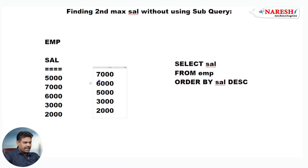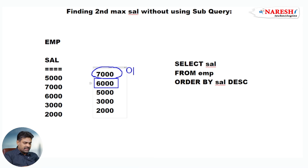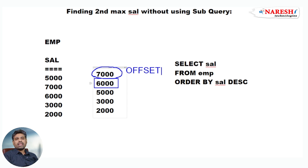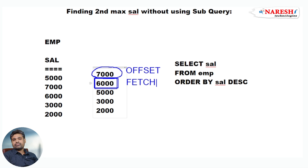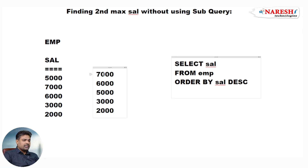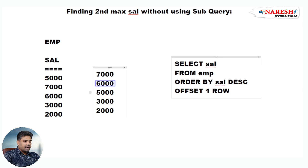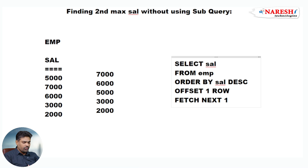Our requirement is getting this second maximum salary, so we want to skip the first row display. To skip rows, we use the OFFSET clause. Using the OFFSET clause we can skip rows. Then we want to fetch the next row, so we use the FETCH clause. We do not want to get the first row, so write OFFSET 1 ROW. Next, we want to get next one row only — FETCH NEXT 1 ROW ONLY.